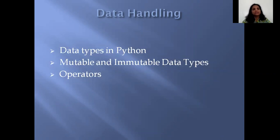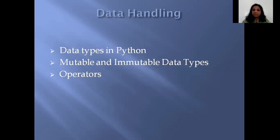In this chapter called Data Handling, we'll be talking about three topics. In this part of the chapter, we will be talking about data types in Python, a very important term called mutable and immutable data types, and operators. You have come across the word operators in the previous chapter — I mentioned them but didn't explain what each operator does. Here, we are going to be learning each of those operators.